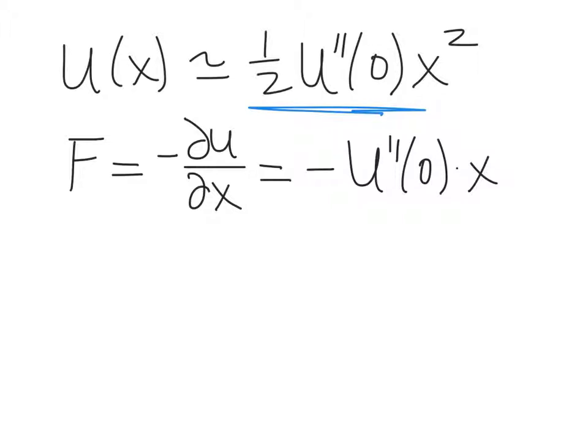And recall that Hooke's law is minus kx. And so what this tells us is that the second derivative of the potential energy function evaluated at equilibrium, that is the spring constant or the oscillating constant in the system.